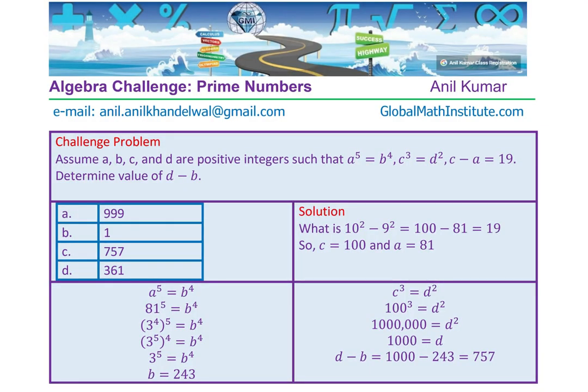So the question was, we are given the value. Here, A, B, C are positive integers such that A to the power of 5 equals B to the power of 4. C cubed is D squared. C minus A is 19. We need to find the value of D minus B.